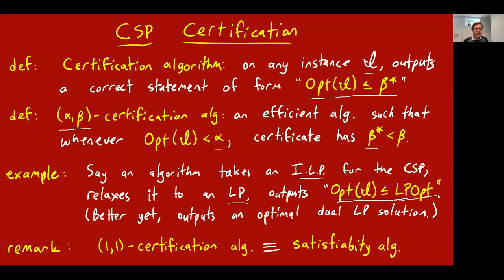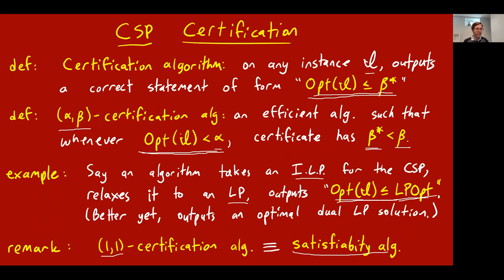A one-comma-one certification algorithm is nothing more than a satisfiability algorithm. It's an efficient algorithm with the property that whenever the optimum value is strictly less than one — i.e., whenever it's unsatisfiable — the algorithm outputs a beta-star less than one, certifying the instance is unsatisfiable. So you run the algorithm: if it certifies unsatisfiability, it's unsatisfiable; if it outputs one, then it must be satisfiable.